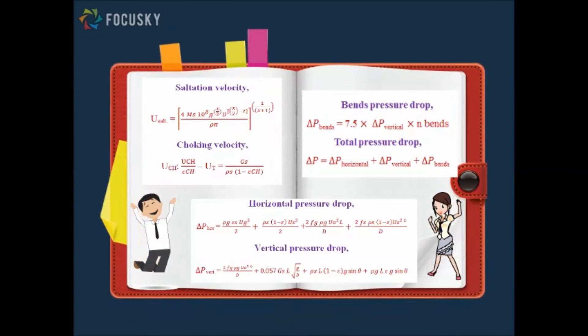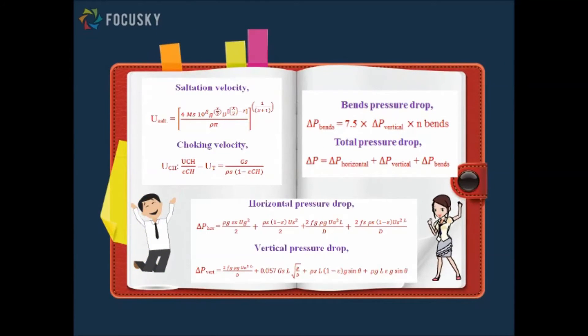Here are the parameters needed to design the pneumatic transport system. Firstly, both saltation and choking velocity are determined so that they can be used in the calculation of pressure drop for both horizontal and vertical line.